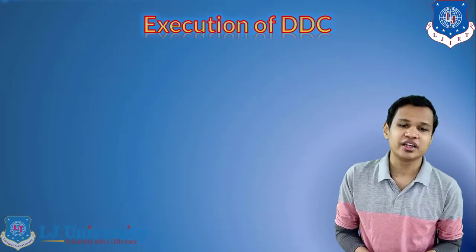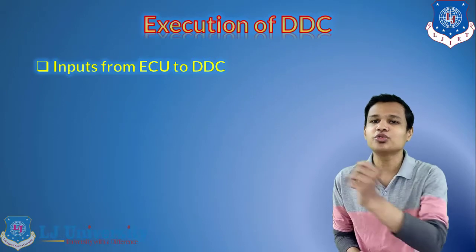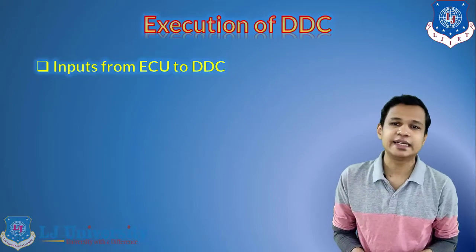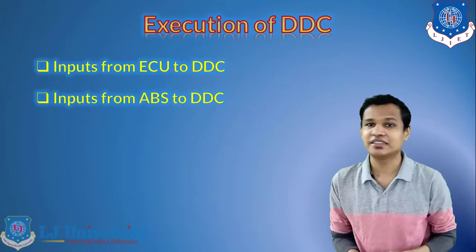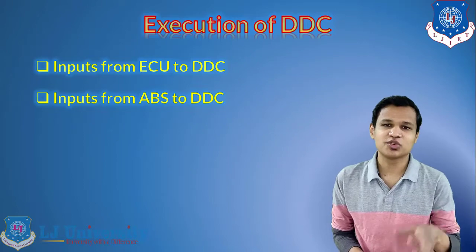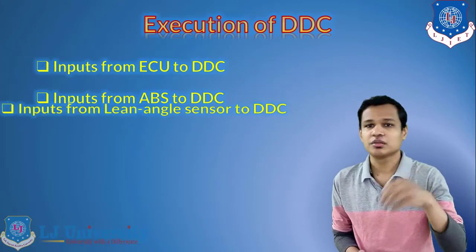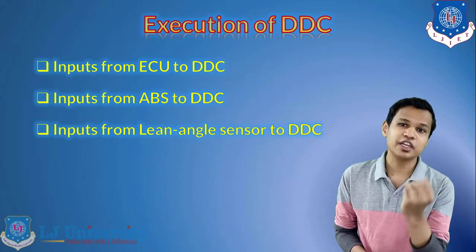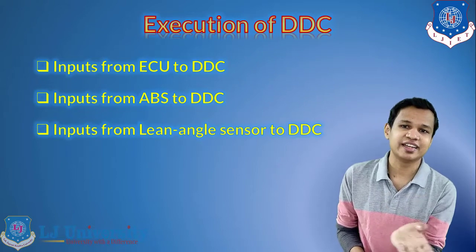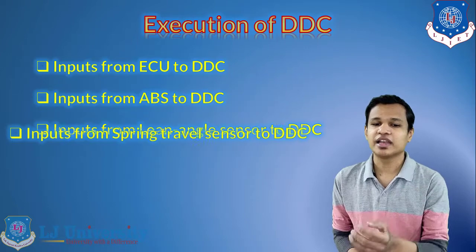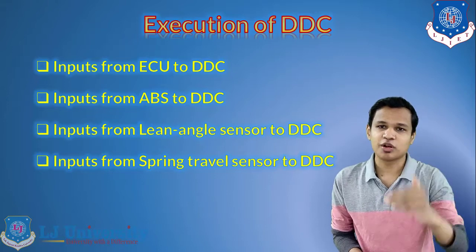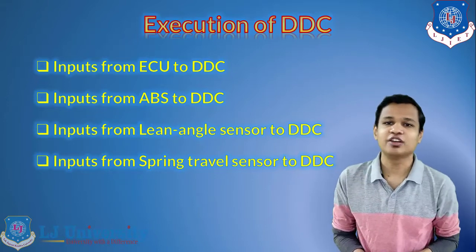How the DDC is executed: first, inputs go from the ECU to the DDC. The ECU takes input from the system and provides it to the DDC. Second, inputs come from the ABS to the DDC — whenever brakes are applied, ABS sends a signal to the DDC to control the motion and path of the vehicle. Third, the lean angle sensor sends the lean angle during turns to the DDC. Fourth, the spring travel sensor sends the spring's up and down travel data to the DDC.